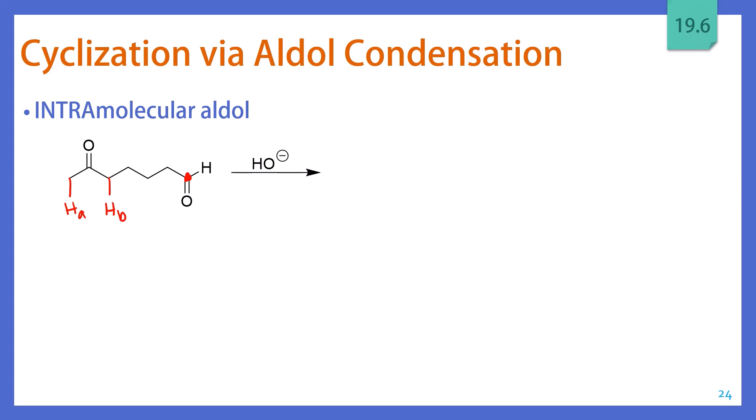Now to decide between HA and HB, we have to think about what our product would look like. So if we pulled off HA, we would have a ring that is 1, 2, 3, 4, 5, 6, 7 carbons. If we pull off HB, we would have a product with a 1, 2, 3, 4, 5 membered ring. Now you just have to think about which one would we prefer, a 5 membered ring or a 7 membered ring. Hopefully you're going 5 membered ring and we want to pull off HB. So by deprotonating HB here, we also see that we end up with the more substituted alkene in our enolate than if we had pulled off HA. So there are a lot of reasons that HB is the better proton to pull off.